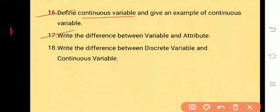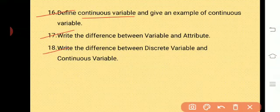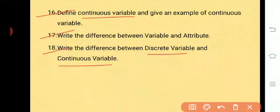The next question is: write the difference between variable and attribute. Based on their definitions and examples you can easily write the difference. The last question is: write the difference between discrete variable and continuous variable — based on the definitions and examples discussed, you can easily write those differences.